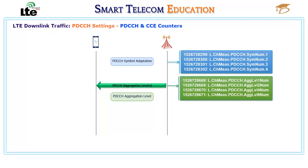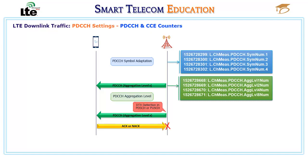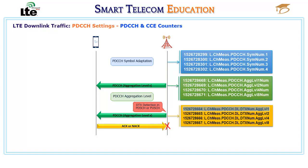When the eNodeB sends a PDCCH message to a UE, it expects to receive an ACK or NACK from the UE. If no ACK or NACK is received and a DTX is detected in the PDCCH or PUSCH, the eNodeB increments DTX counters for PDCCH resource allocation with aggregation levels 1, 2, 4, and 8. PDCCH allocations without feedback, such as SIBs, random access responses, and paging messages, are not counted.